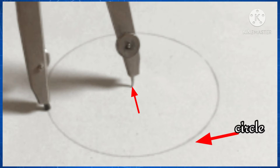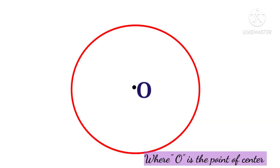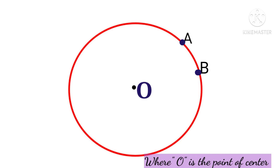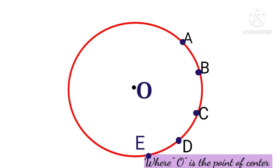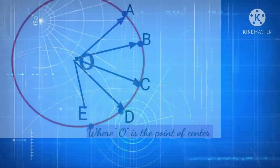The point at which we fixed one end of the compass is called the center of that circle. Now let's do an activity. Here I have drawn a circle with center point O. Let's take a point A on the circle. Suppose point A moves to point B, B moves to C, C moves to D, D moves to E, and E moves back to A. Now let's check the distance from center O to each of these points: OA, OB, OC.